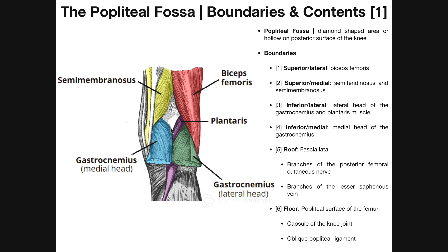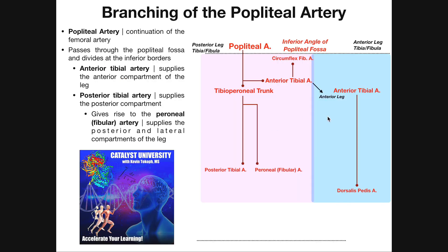The inferior angle of the popliteal fossa is really formed by the two heads — medial and lateral — of the gastrocnemius muscle. The popliteal artery descends down the popliteal fossa distally, and once it gets to the inferior angle, that's where it exits into the posterior leg. The pink part on the left is the posterior leg, and blue on the right is the anterior leg.